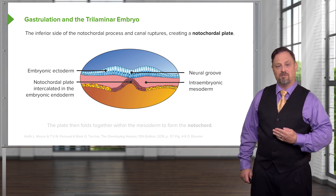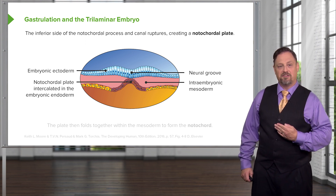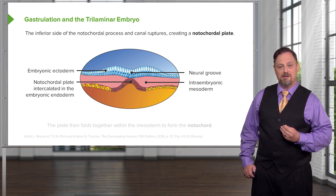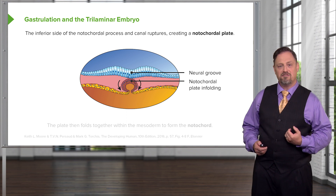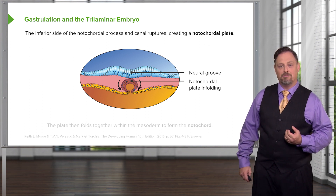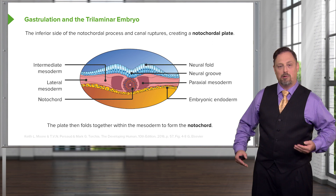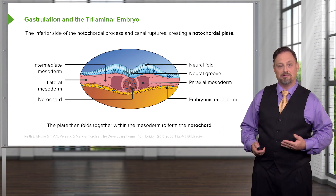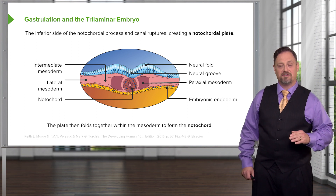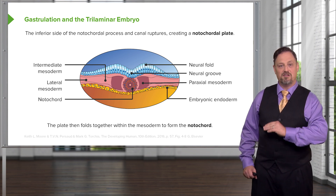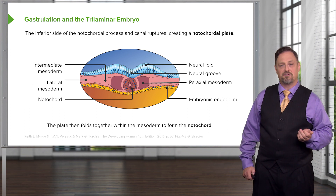We now have a coronal view through the trilaminar embryo. We can see that the notochordal plate is migrating in between the endoderm below and the ectoderm above. As it forms a tube, the two ends of the notochordal plate will pinch together within the mesoderm, pulling the underlying endoderm together to form a continuous sheet below the notochord, just as the ectoderm forms a continuous sheet above or dorsal to the notochord.